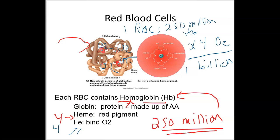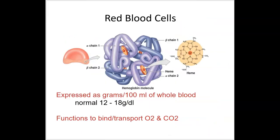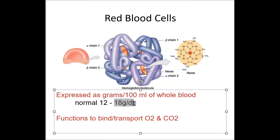We also need to know how we measure hemoglobin. It's not measured as a percent but as grams per 100 mLs — grams per deciliter. Normal range is 12 to 18 grams per deciliter. Women are closer to 12–15 and males on the higher end, 15–18, again due to testosterone.